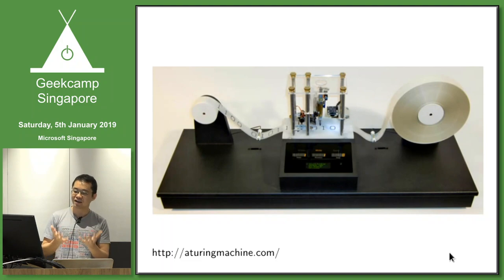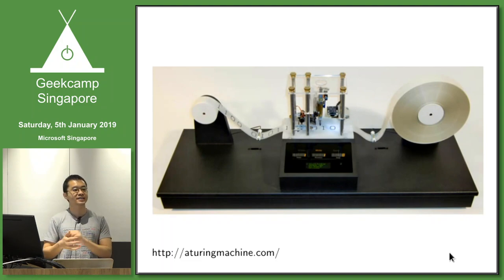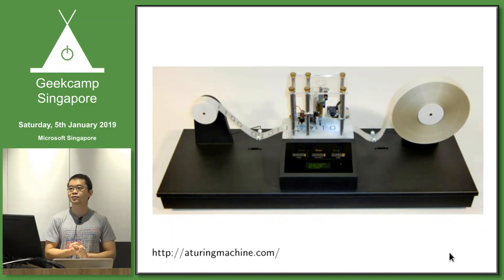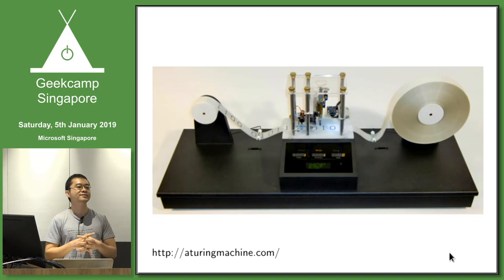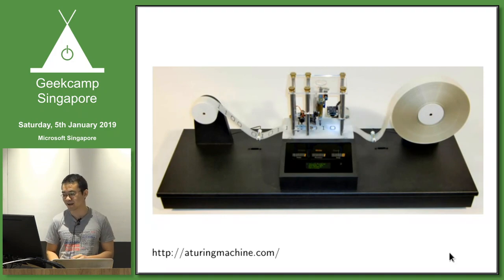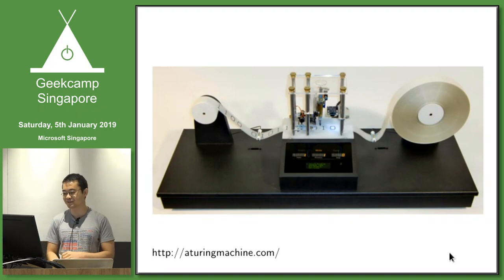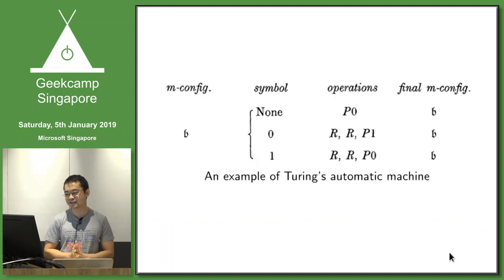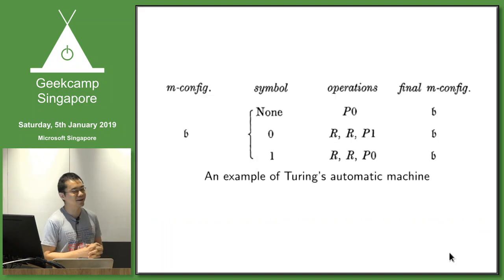That's not enough, because this should be automatic — with a typewriter, you need someone to punch the keys. So Turing devised a logical table to replace the person, making it a fully automatic proto-computer. Let's look at his first machine — what I'd call the Hello World machine of the day.